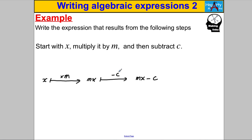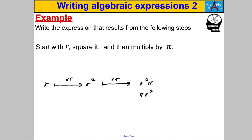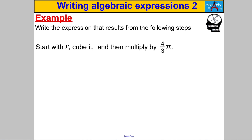Start with R, square it — multiply it by itself — to get R squared. Then multiply by pi, which is an important number we'll learn about in geometry. You could write R squared pi or pi R squared. Mathematicians prefer to put lower powers first, so we write pi R squared.